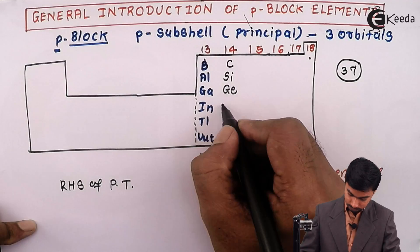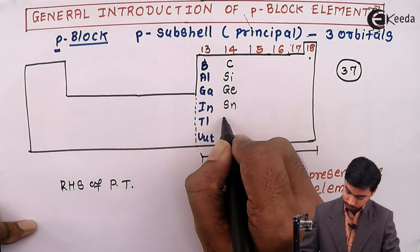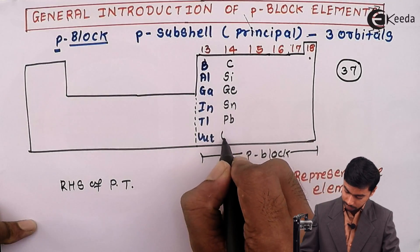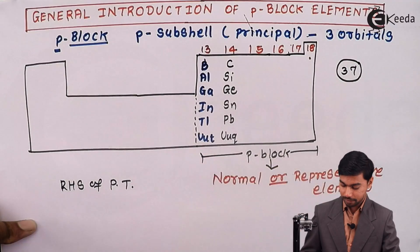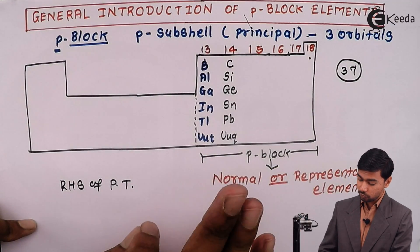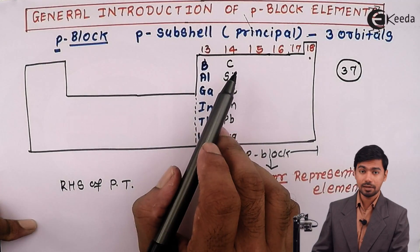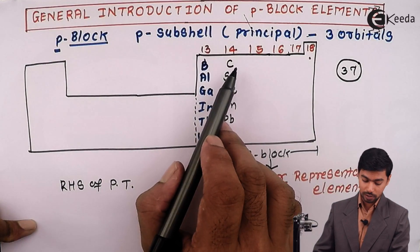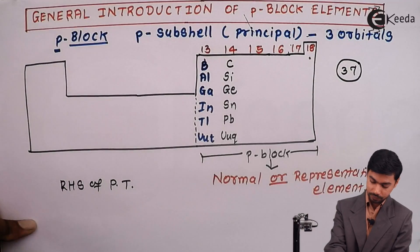The elements present in group 14 are Carbon, Silicon, Germanium, and others. Since the elements of group 14 start with the element Carbon, this group is also called the Carbon family.